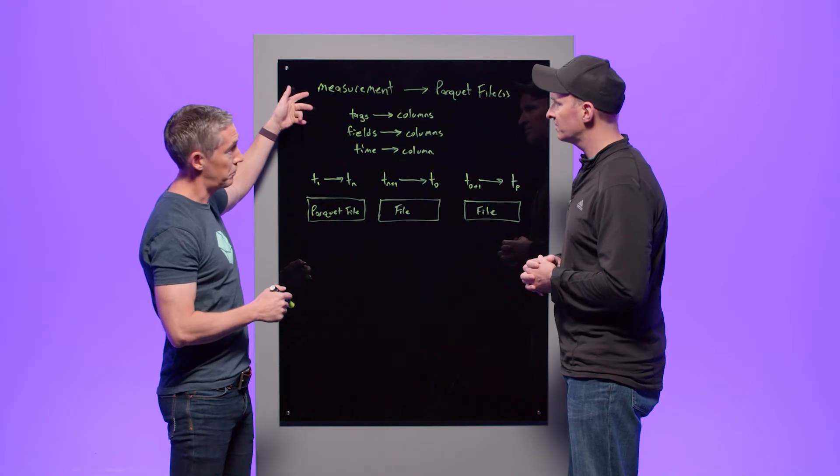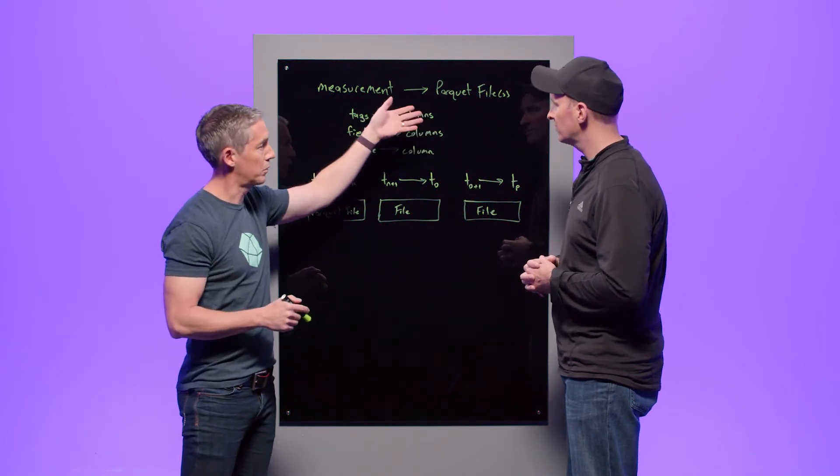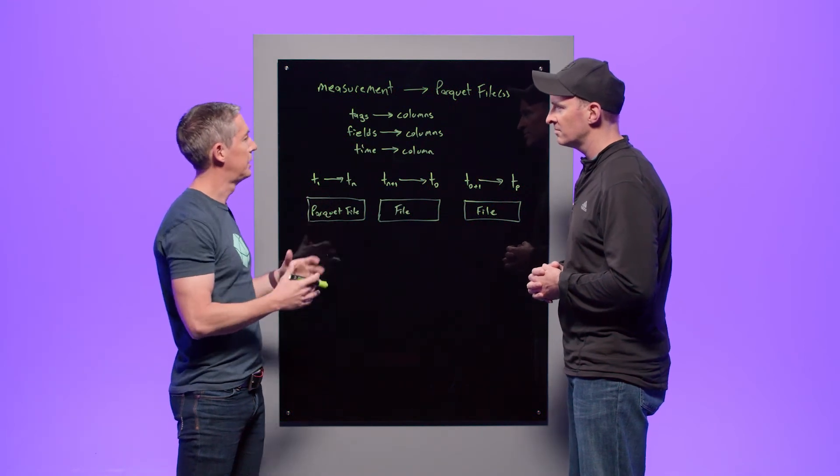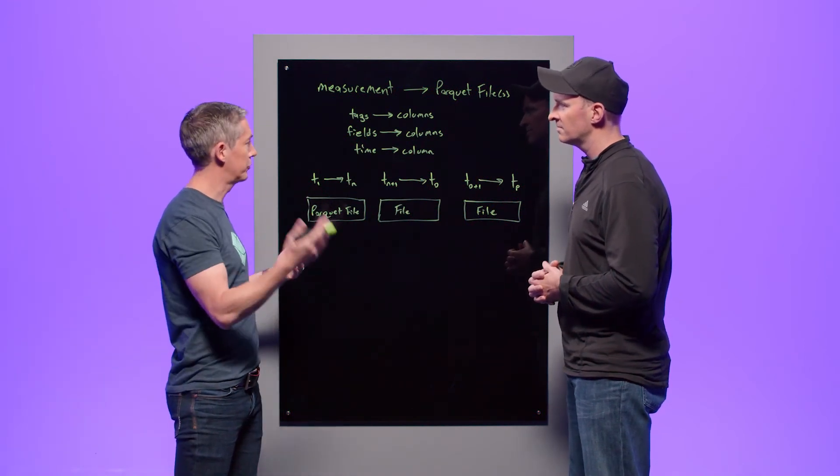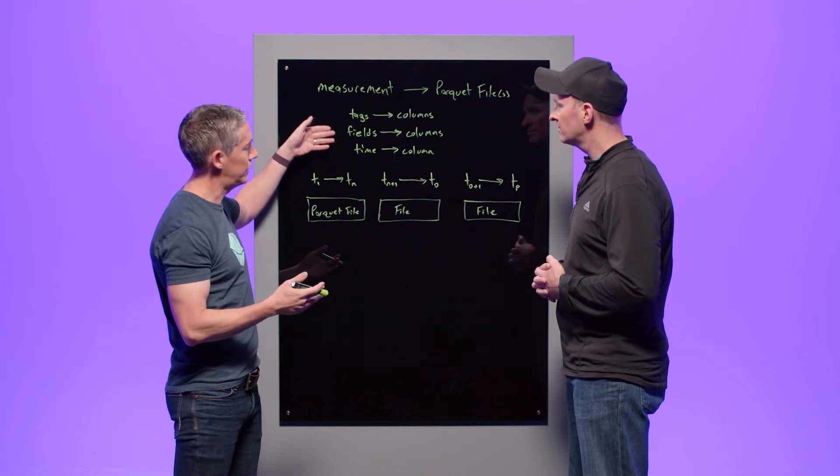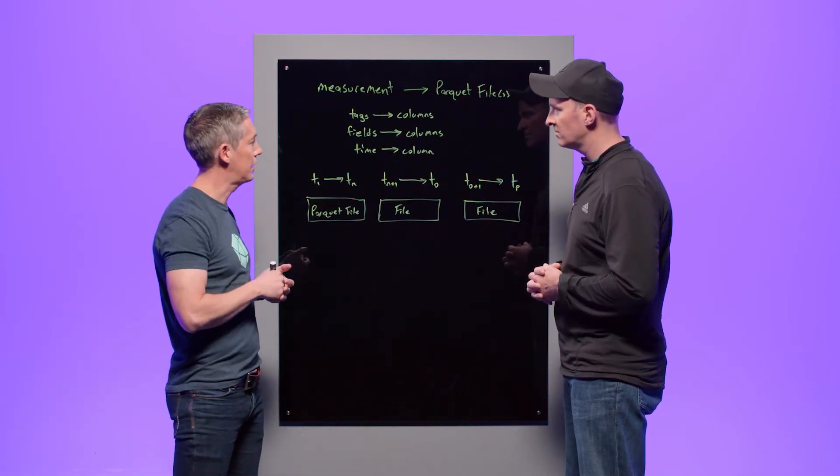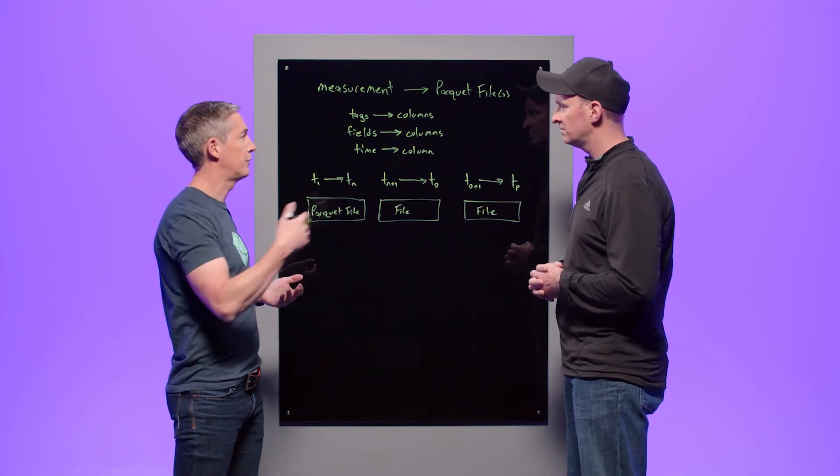So at the top you have a measurement and that maps to one or more Parquet files. So a single Parquet file has all the data for a given measurement. And within that, obviously the columnar format, you have tags, fields, and the time that all map into individual columns in Parquet. And again, those columns can use different encoding schemes to get the best possible compression. And what we've seen in our testing is that data in InfluxDB 3.0 actually compresses better than it has in previous versions of InfluxDB.